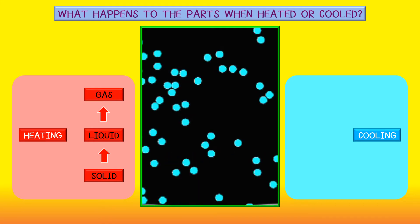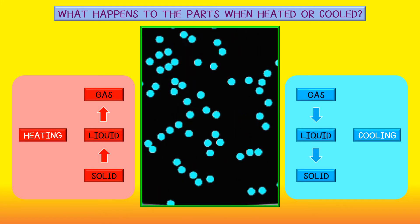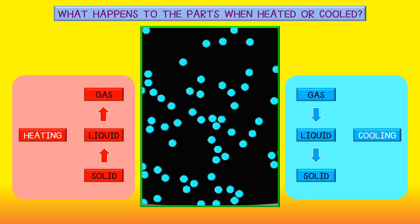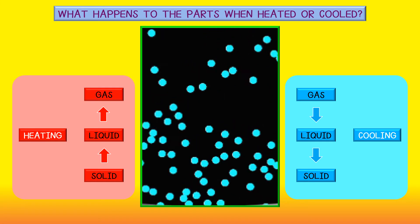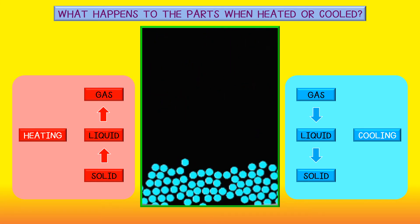This process is reversible because water vapor can be cooled to form liquid water, and liquid water can be cooled to form ice.